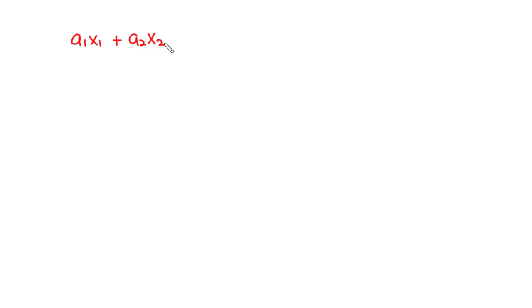In today's video, we are going to introduce ourselves to a system of linear equations. Specifically in this video, we are going to learn how to find the solution to a given linear equation. Any linear equation can be written in the form a1x1 plus a2x2 plus through to anxn equals b, where a1, a2 through to an and b are called constants or the known values, whereas x1, x2 through to xn are called the variables or the unknowns.